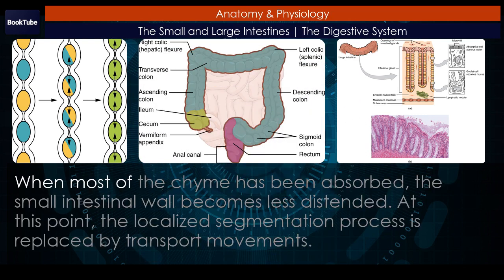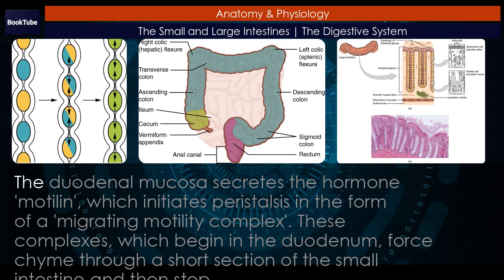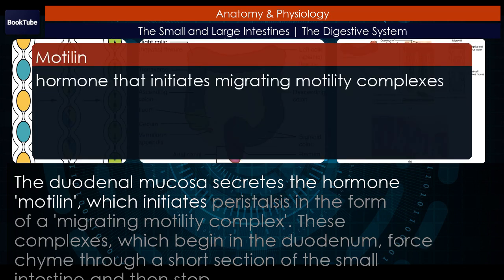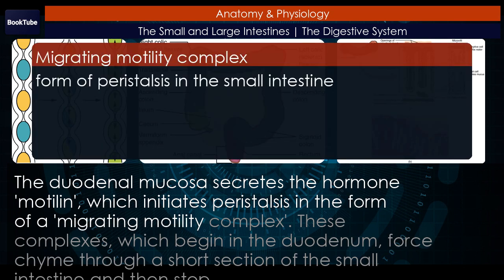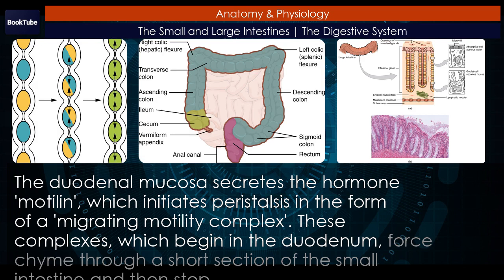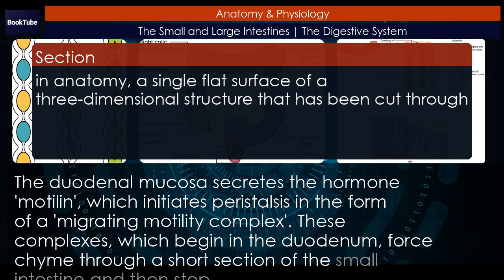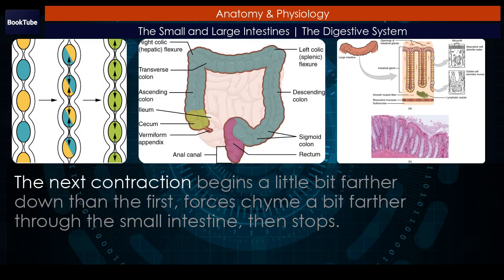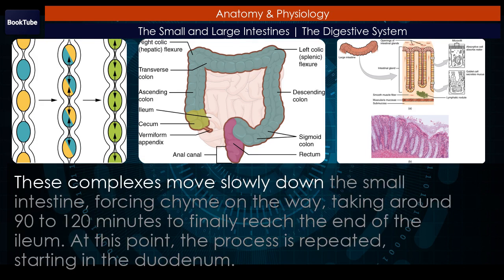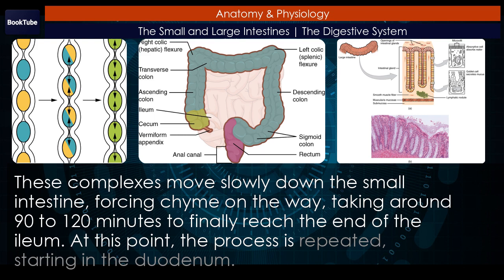When most of the chyme has been absorbed, the small intestinal wall becomes less distended. At this point, the localized segmentation process is replaced by transport movements. The duodenal mucosa secretes the hormone motilin, which initiates peristalsis in the form of a migrating motility complex. These complexes, which begin in the duodenum, force chyme through a short section of the small intestine and then stop. The next contraction begins a little farther down, forcing chyme farther through the small intestine. These complexes move slowly down the small intestine, taking around 90 to 120 minutes to finally reach the end of the ileum, at which point the process is repeated, starting in the duodenum.